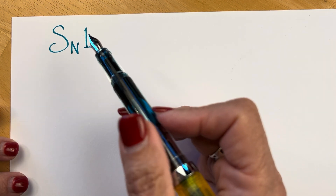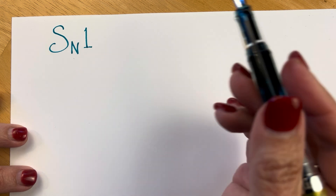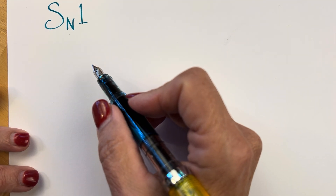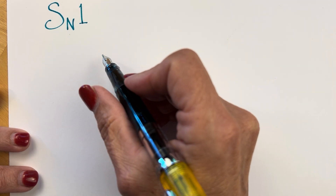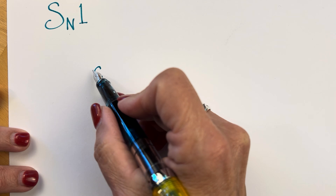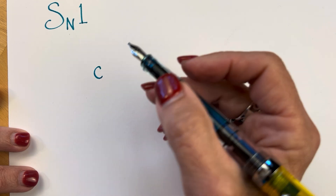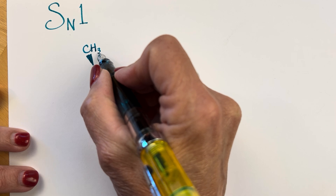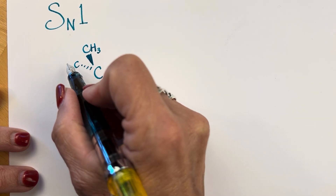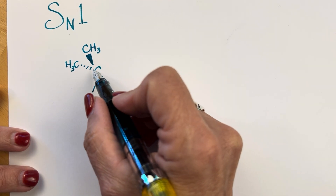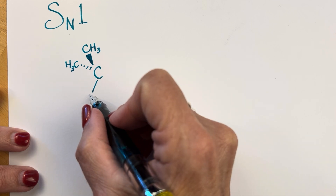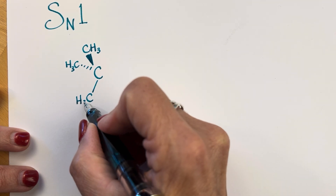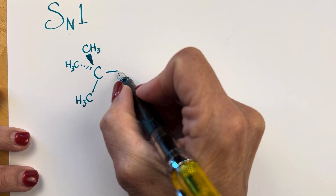Let us go through an example of this. I want to talk about 2-chloro-2-methylpropane. We are going to be focusing on the central carbon, where there are methyl groups around it. The reason why you see central carbons with methyl groups around them undergoing SN1 reactions is that it will stabilize our intermediate. We are going to see more about that in a moment.